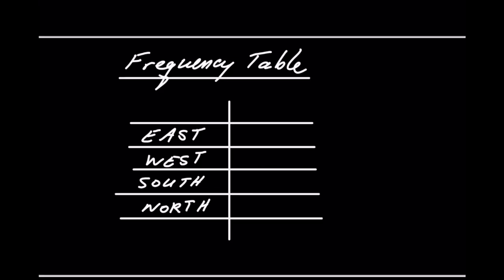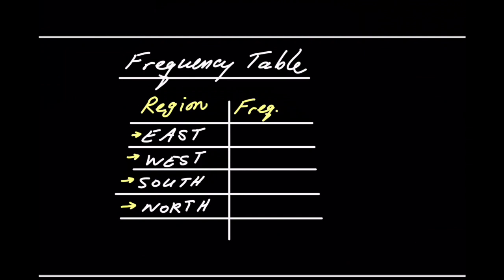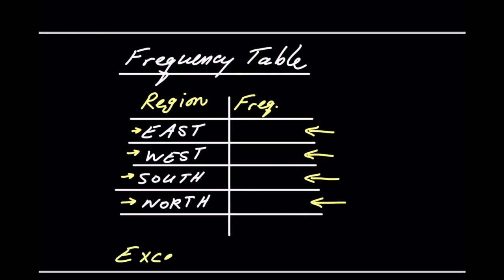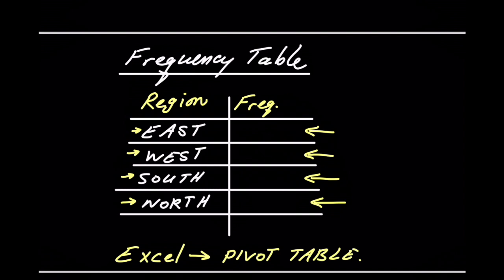Ultimately what I'd like to have is a frequency table where the first column is region, the rows are the different regions, and the second column is the frequency or count — the numbers corresponding to how many transactions came from east, west, south, and north respectively. There's an automated way of doing this in Excel using pivot tables.